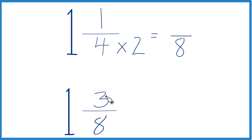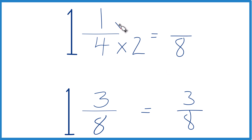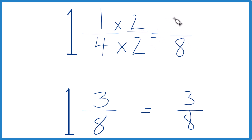Down here we already have three-eighths, so let's keep that the same. We can't just multiply the denominator by two — we also need to multiply the numerator by two. Two over two is just one, so we're multiplying by one, which doesn't change the value, just the way it's represented. One times two is two, giving us two-eighths, which is the same value as one-fourth. These are equivalent fractions.